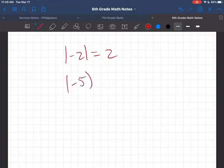So what's the absolute value of negative five? Well, excuse me. The absolute value of negative five? Well, that's just five.